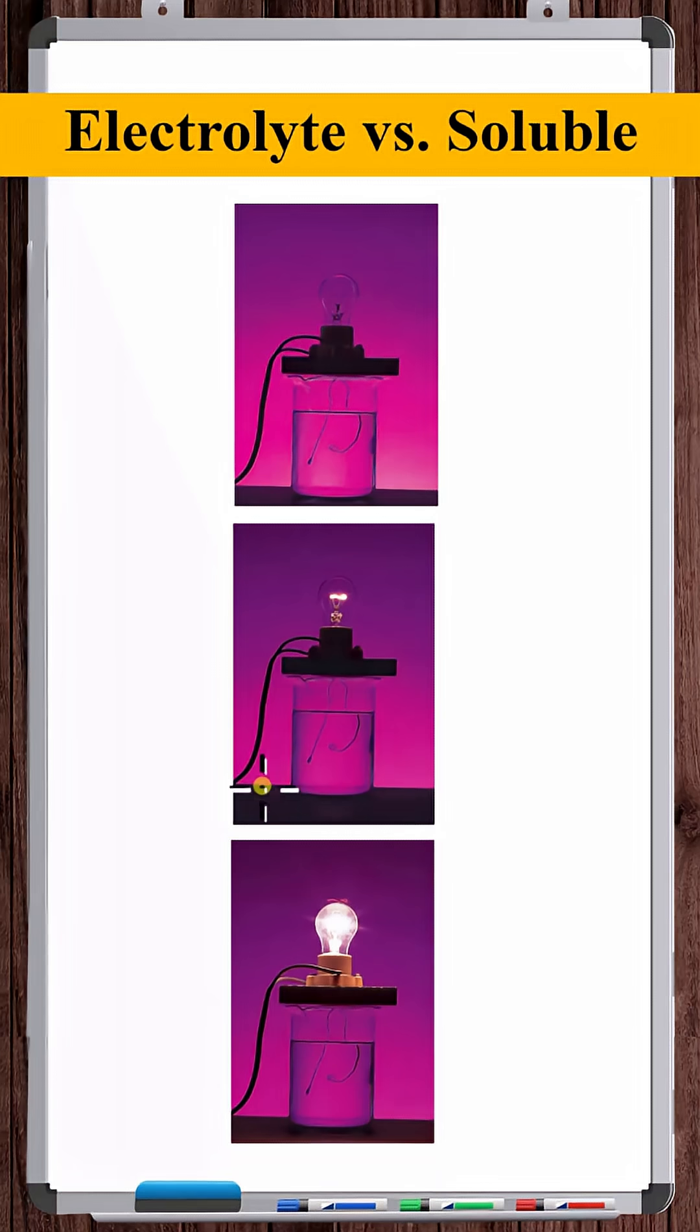Or it could be that you have a strong electrolyte dissolved here, but it's not very soluble. So you can't add enough of the electrolyte to get the bulb to shine bright.